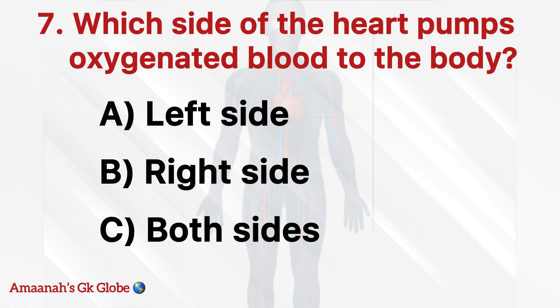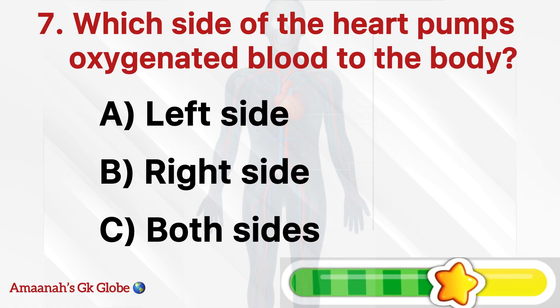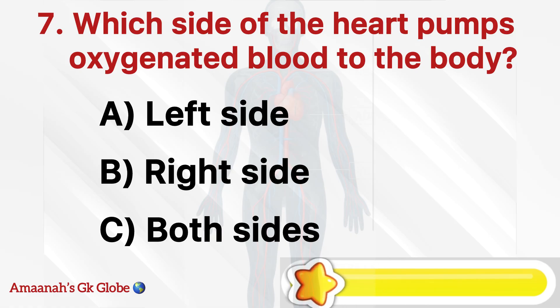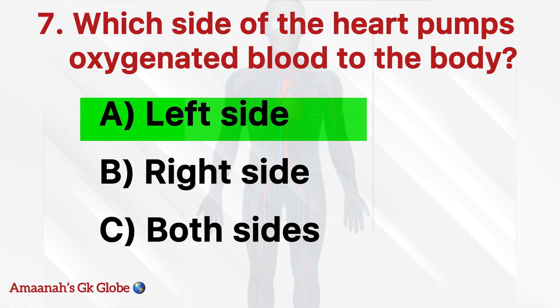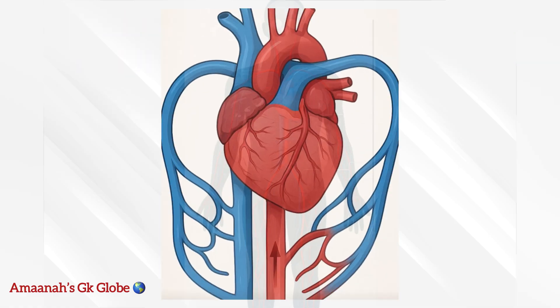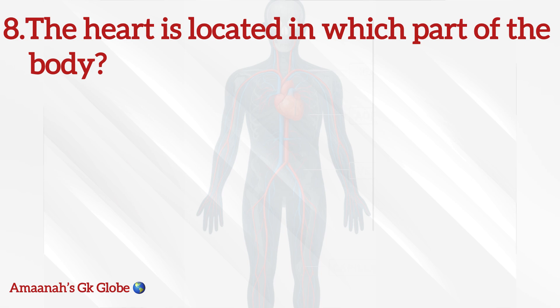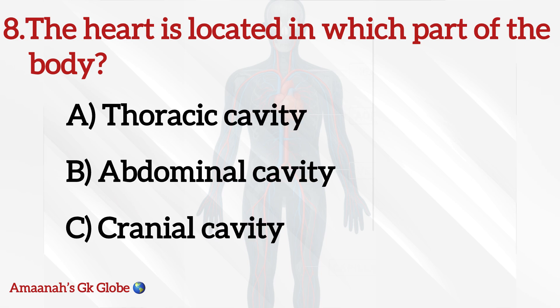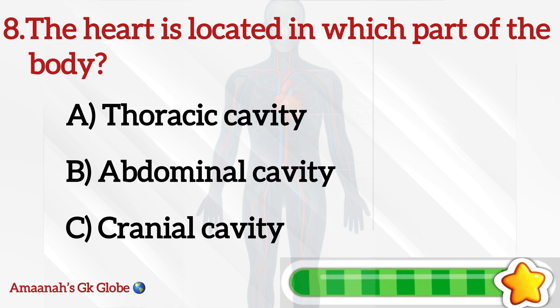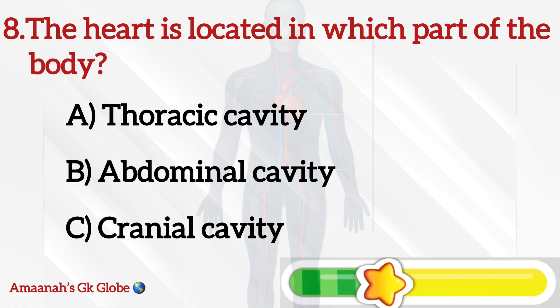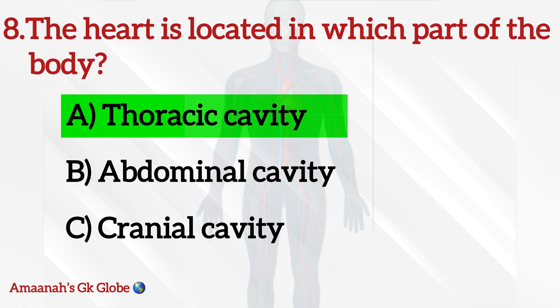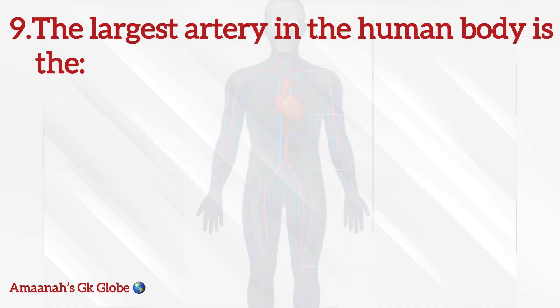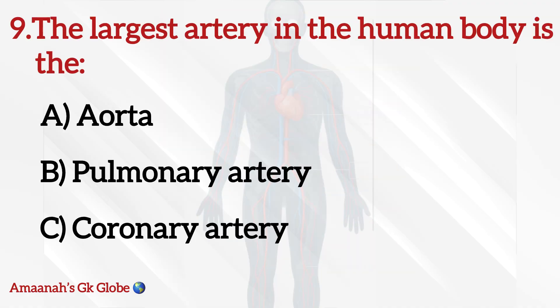Platelets. Which side of the heart pumps oxygenated blood to the body? Left side. The heart is located in which part of the body? Thoracic cavity. What is the largest artery in the human body?